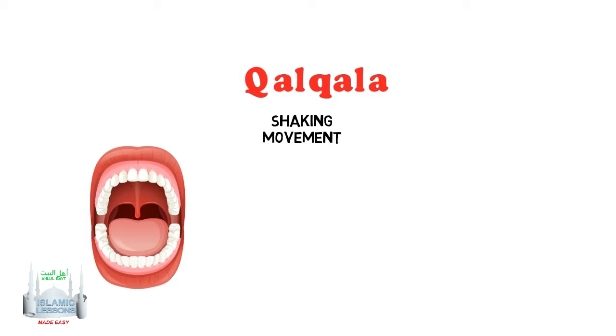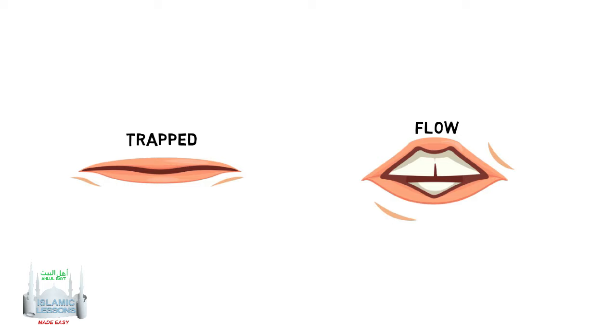The word Qalqala means shaking or movement. In Tajweed terminology, it means the movement or vibration of the makhraj with the pronunciation of one of these letters when they are sakin. It is caused by a sudden release of the flow of sound after it has been trapped under pressure in the makhraj, producing an additional sound which gives emphasis and clarity to the letter.